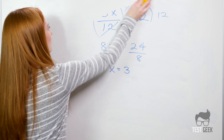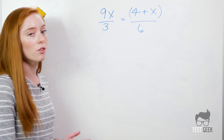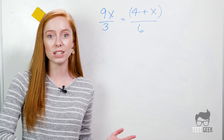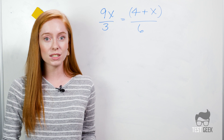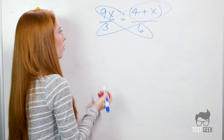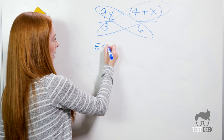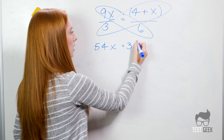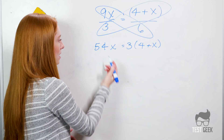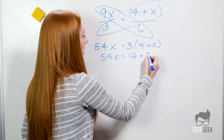Let's look at another. 9x over 3 equals 4 plus x, all over 6. This one's a little trickier — we have variables on both sides and two fractions. One thing you should always be thinking is you can cross multiply. So we multiply 9x times 6, and then 3 times (4 plus x), setting those two equal to each other. So 9x times 6 is 54x, equals 3 times (4 plus x). Don't forget your parentheses — we're multiplying that 3 by both the 4 and the x. So we get 54x equals 12 plus 3x.